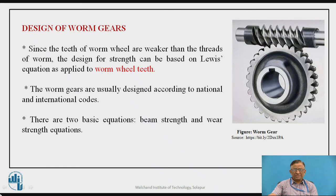As we know, the worm gear drive essentially consists of the worm and worm wheel. The worm is essentially in the form of a screw, whereas the worm wheel is in the form of a helical gear. So basically it is transmitting power from a screw to a gear — it is not a gear-to-gear pair. That is why the linear motion of the worm is converted into rotary motion of the worm wheel. This is the basic difference between all other gear drives and worm gear drives.